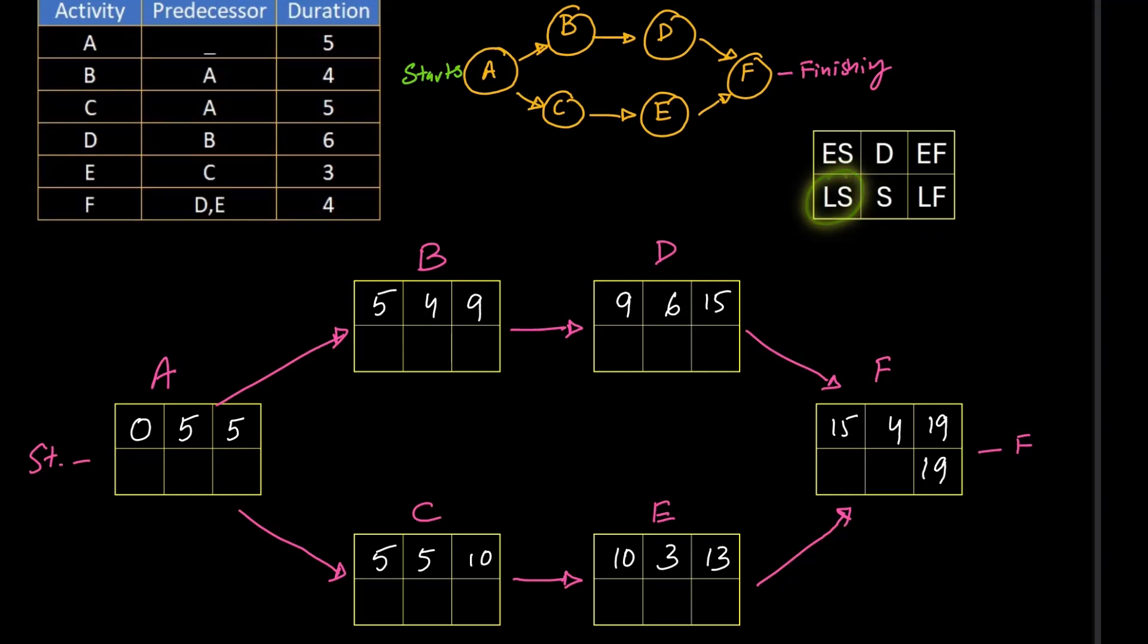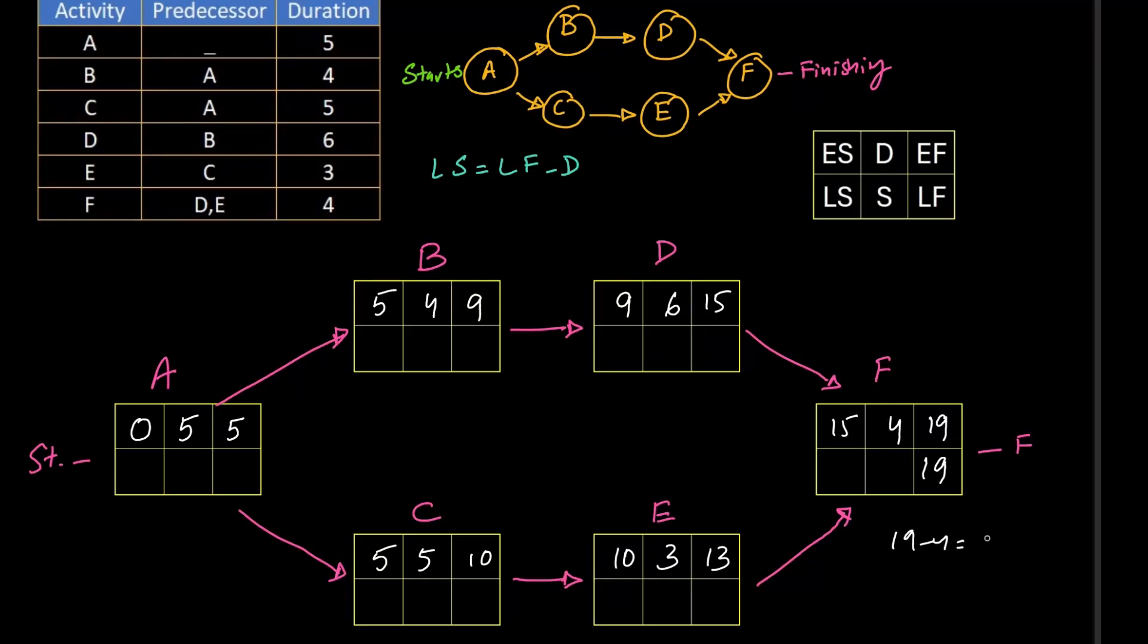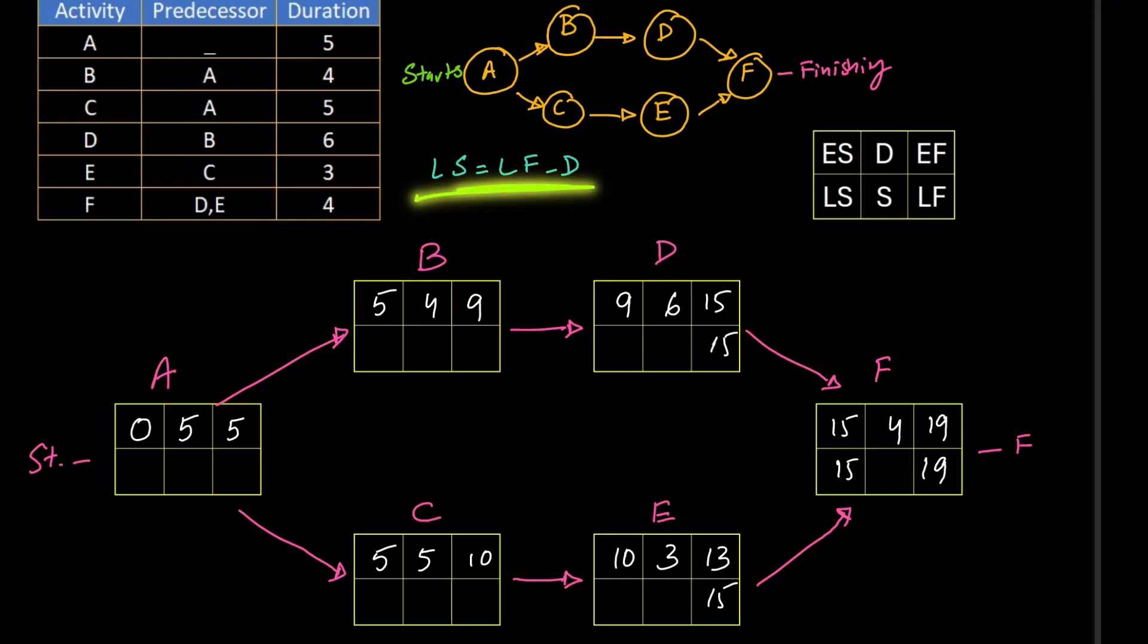We need to find LS. LS has a formula. So LS can be found out by subtracting D from LF. Whatever the duration is, that can be subtracted from the LF. So 19 minus 4 equals 15. We can write 15 in the LS column. Now when going backward in the project, this LS box goes to the LF box of the previous activity. So we can write this 15 here and here. Again making use of this formula, 3 minus 15 will be equal to 12, and 6 minus 15 will be 9. Again similarly, this 12 goes here, this 9 goes to this box.